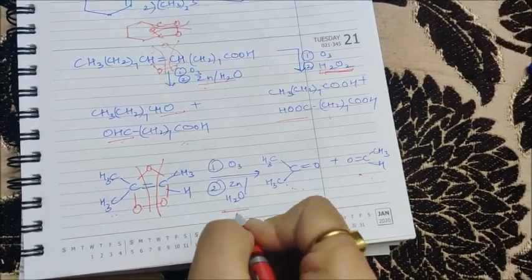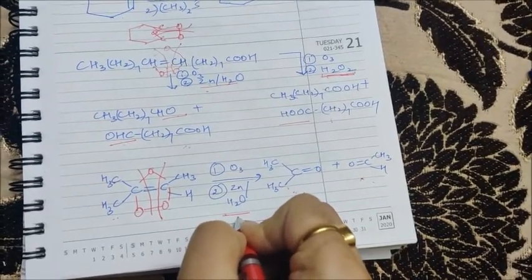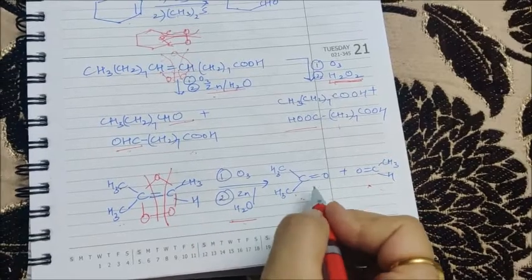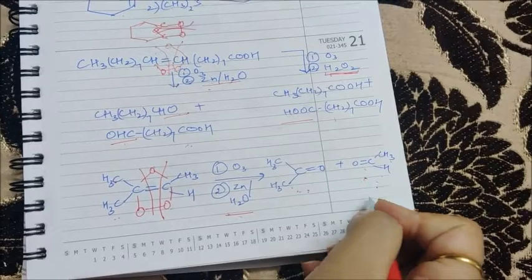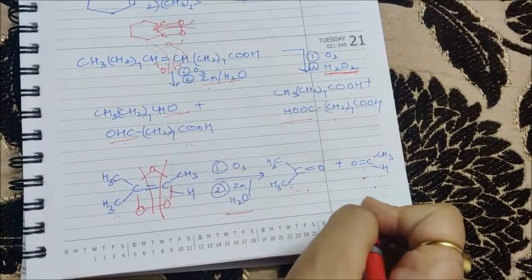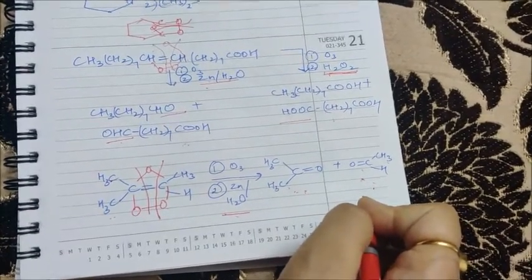If instead of reductive, an oxidative reagent will be there, that is H2O2, then you will be getting this ketone plus this is ethanol, right? So ethanol will be converted to ethanoic acid and you will be getting acid.